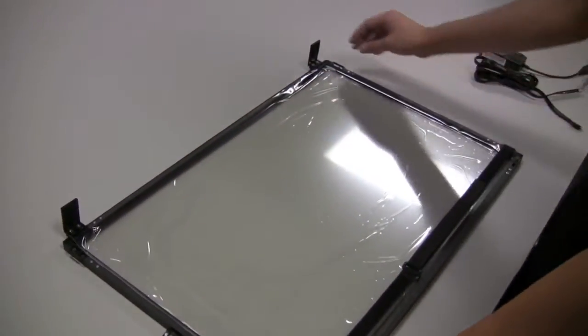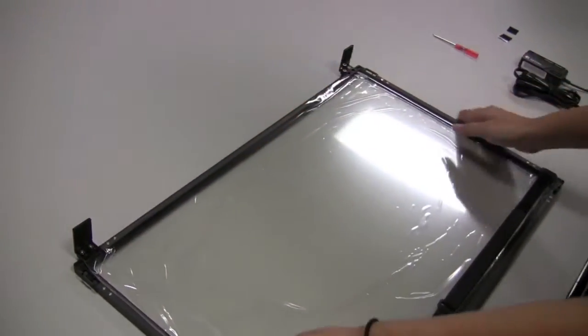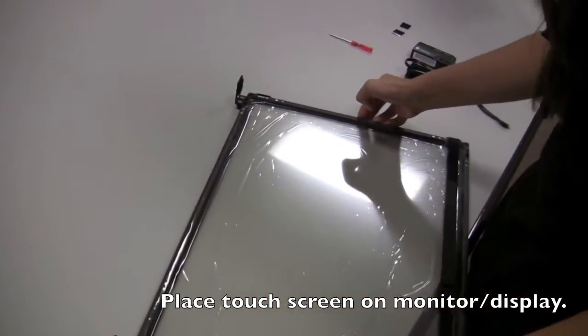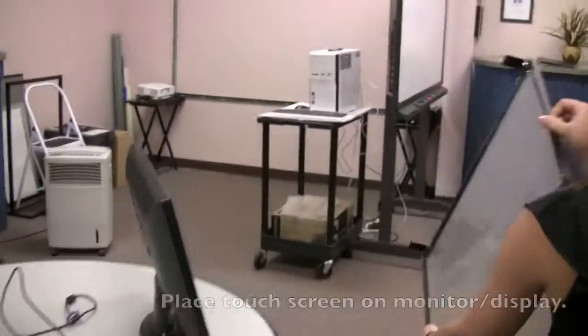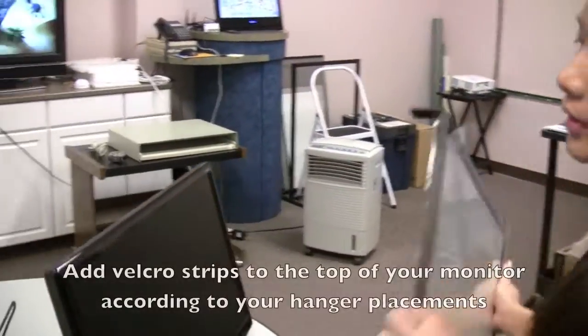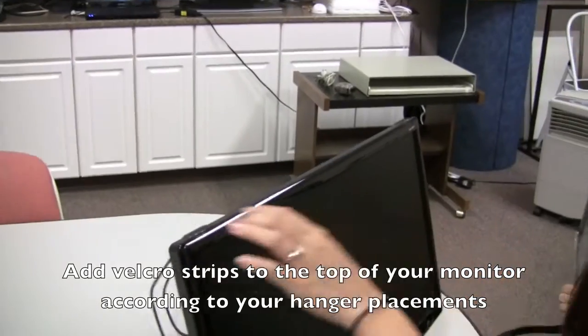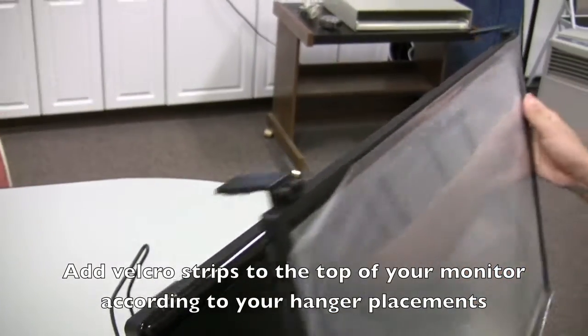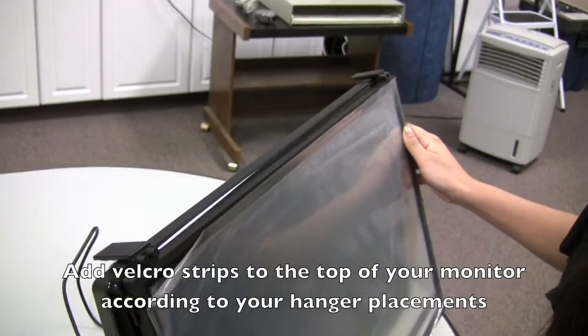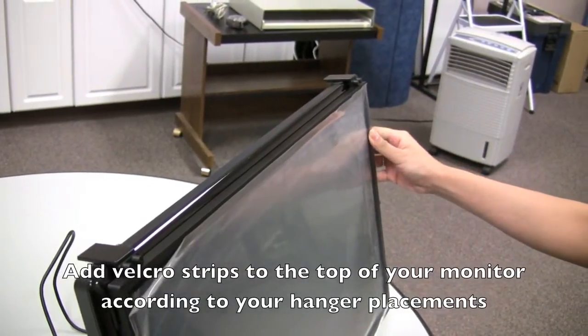Okay, now that we have the hangers attached, we're going to proceed to the touch screen on the monitor. Now you're going to need to add the velcros on top of the monitor. But before that, place the touch screen down just to see approximately where the velcros need to go.